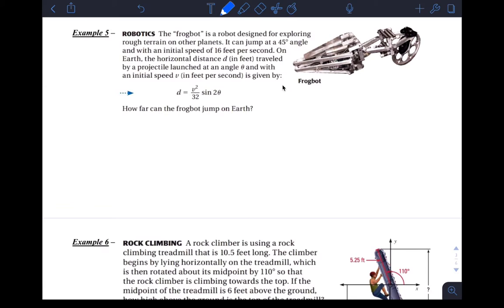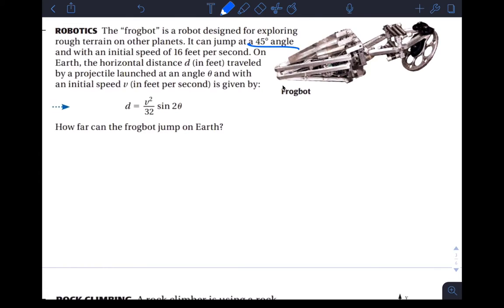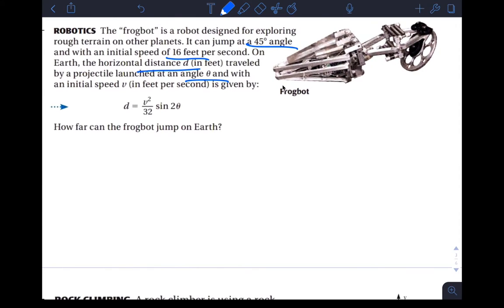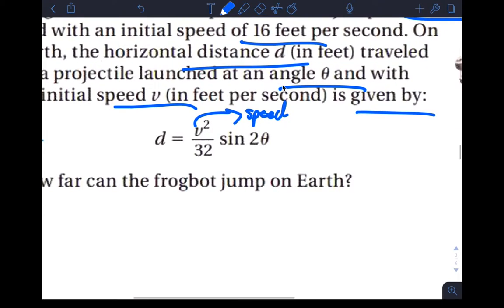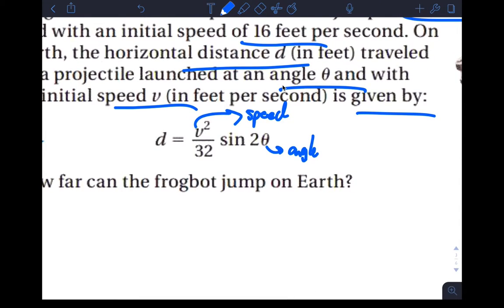Number five is not my favorite example, but I'll do it because it's a textbook example. It talks about this specific little robot called the Frogbot, and it's designed for exploring rough terrain on other planets. It can jump at a 45 degree angle and with initial speed of 16 feet per second. On Earth the horizontal distance traveled by the projectile launched at an angle theta with initial speed v is given by this. So they're just giving us a formula to help us answer the question. So we're going to use this. For us v is speed in feet per second. Theta is the angle at which projectile is launched, angle at launch.